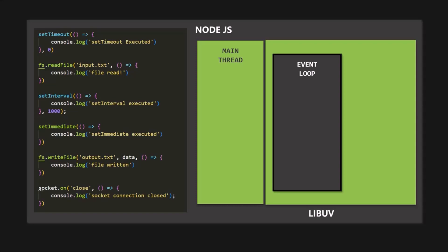When all the top-level code is executed and the main thread is empty, the event loop starts its job — pushing callback functions to the main thread or offloading them to the thread pool. The event loop has multiple phases, and in each phase there is a separate callback queue. The callback queue is where the event loop stores callback functions attached to an event. Each phase has its own callback queue — in some tutorials you might read there is only one callback queue, but that's not true.